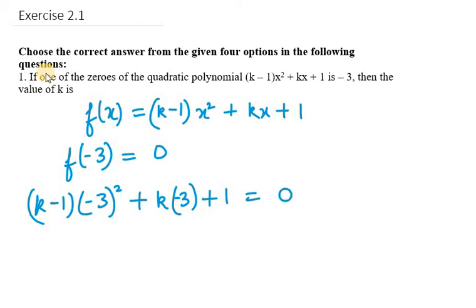So what we get here is (k-1)(9) - 3k plus 1 equals 0.